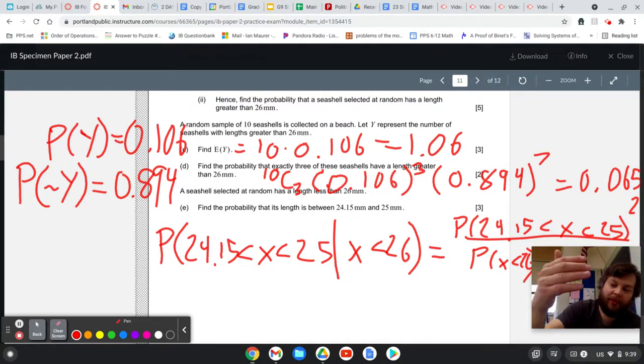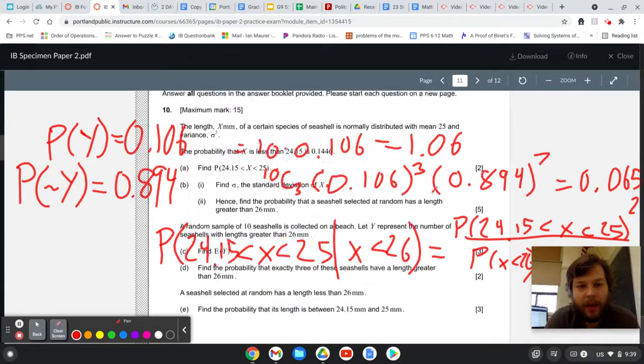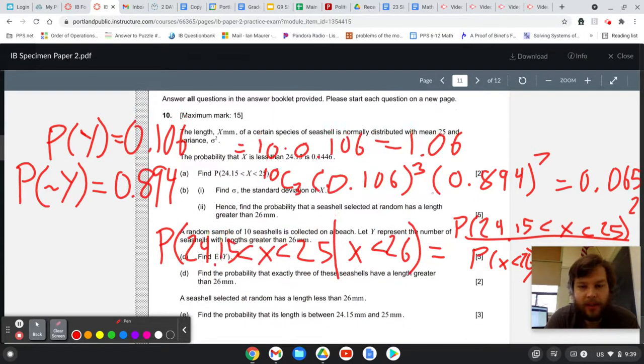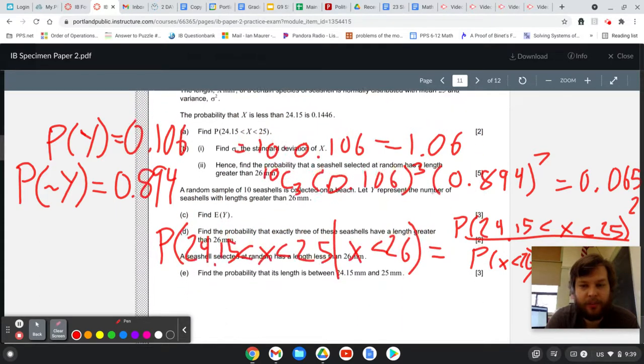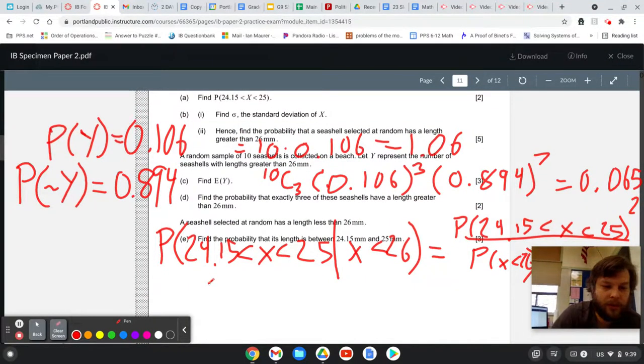So to write that would mean that it's the probability of being between these two values divided by the probability that it's less than 26 because that will fulfill probability of A and B divided by probability of B. Because if it's between 24.15 and 25, it's also less than 26. Okay. So the probability of it being between 24.15 and 25, we found that earlier to be, let's look up at it. Ah, yes. 0.3554. So we have 0.3554 divided by the probability of being less than 26.